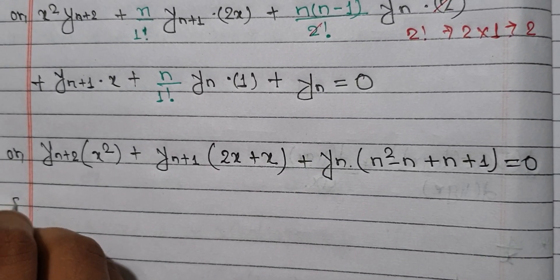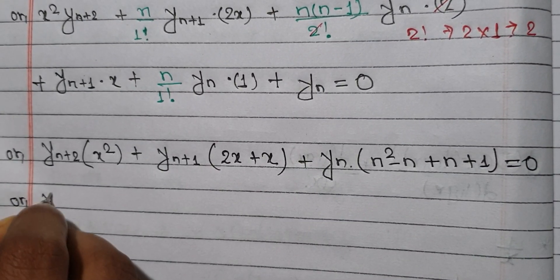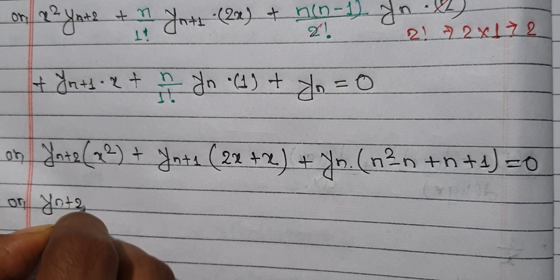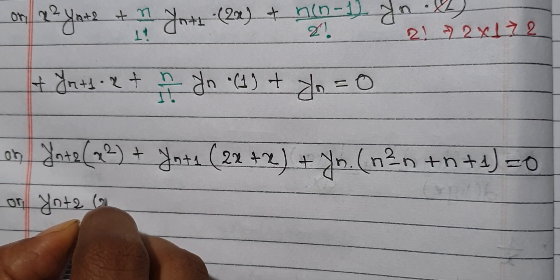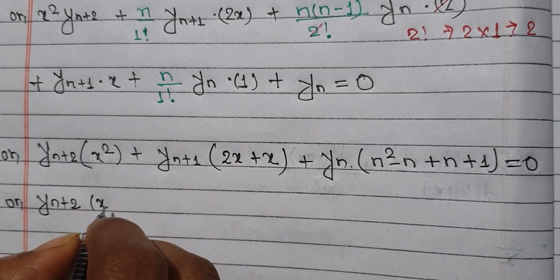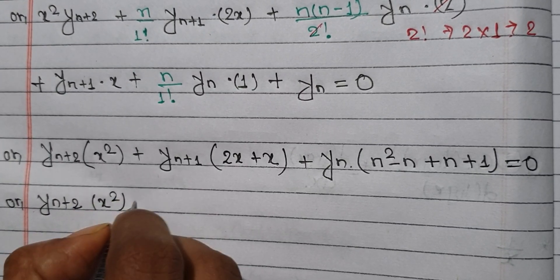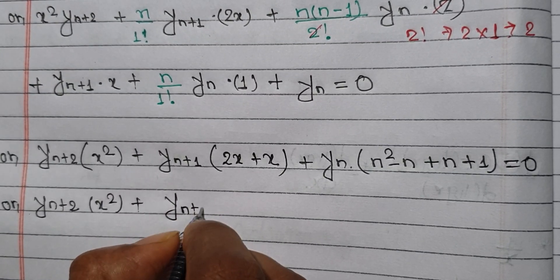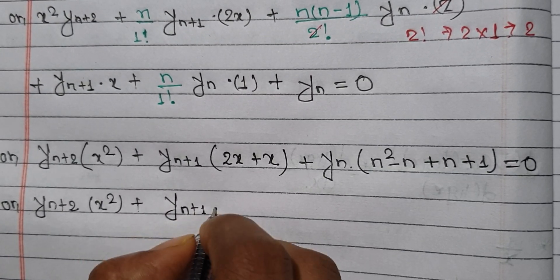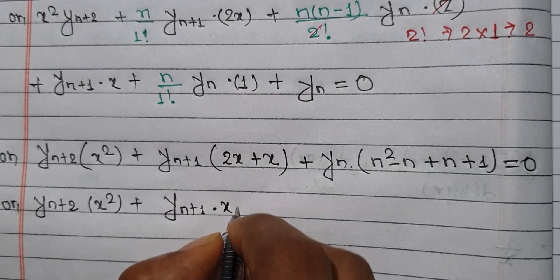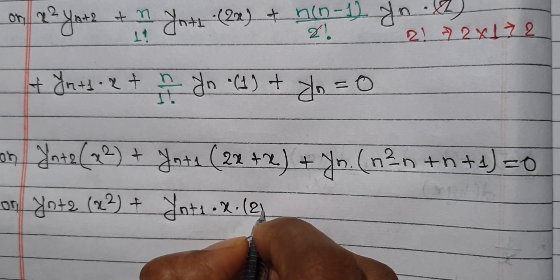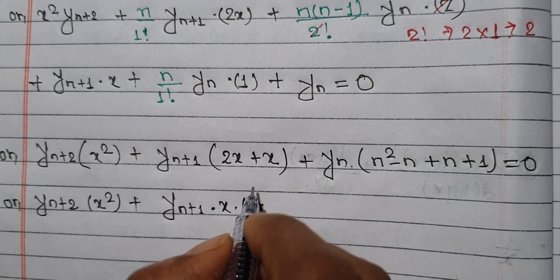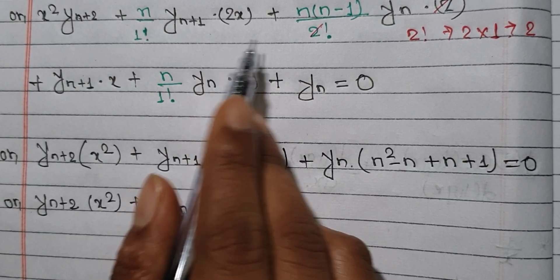So the answer is: yn+2 into x² plus yn+1 into x, which is equals to zero.